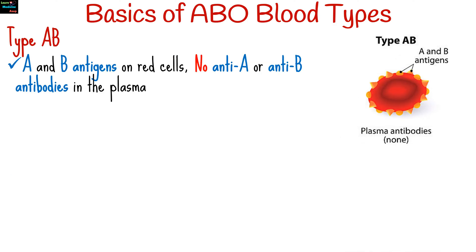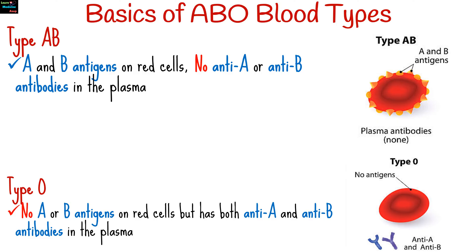Type AB has both A and B antigens on red cells, and no anti-A or anti-B antibodies in the plasma. Type O has no A or B antigens on red cells, but has both anti-A and anti-B antibodies in the plasma.